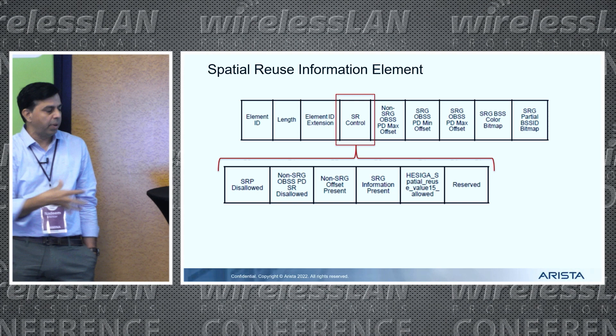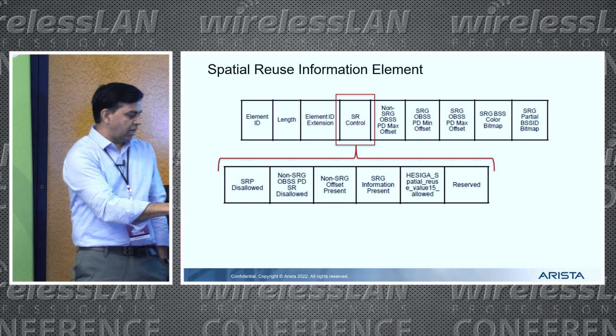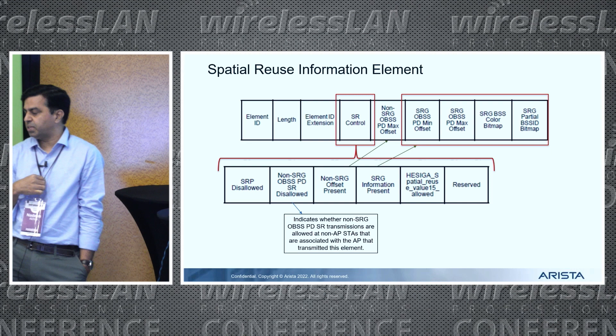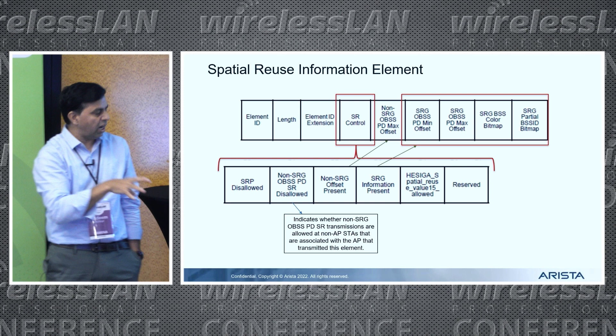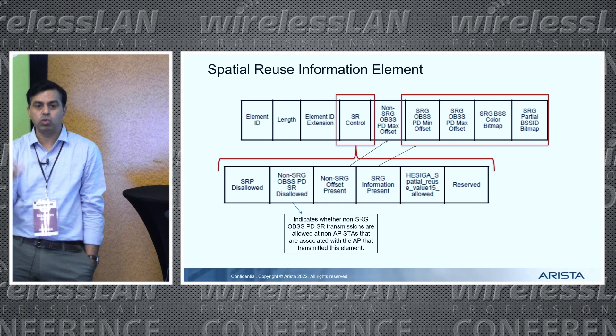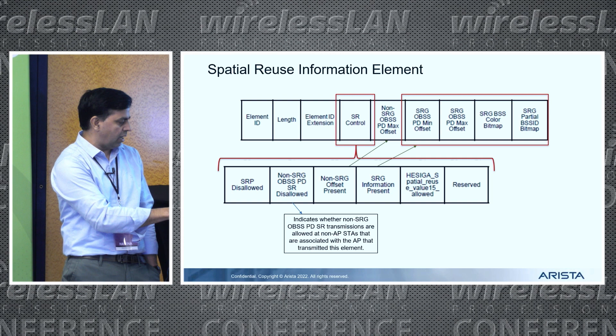In the case of SRG-based spatial reuse, there is another part of the information element containing SRG-specific information. The AP communicates a minimum offset, a maximum offset, and which colors are part of this group. That way, stations can figure out when they receive a transmission from another BSS whether it qualifies as an inter-BSS transmission and whether they can reuse the channel at the same time.